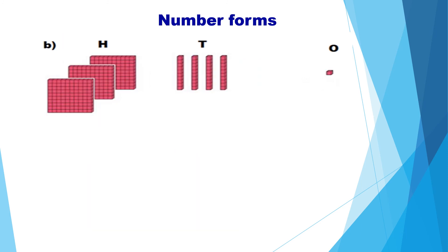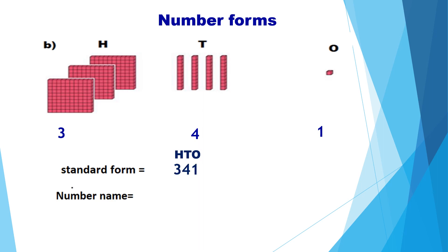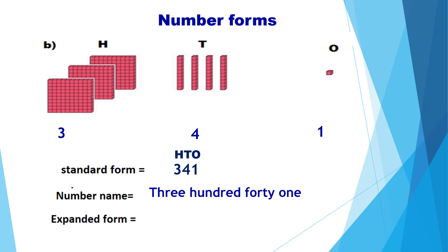Let us see one more example. The number given here has 300 blocks — that is three hundreds — four tens blocks, and one unit block. So the standard form of this number is 341. The number name is three hundred forty-one. And the expanded form of this number is 300 plus 40 plus 1.